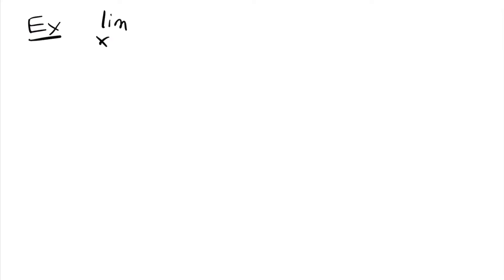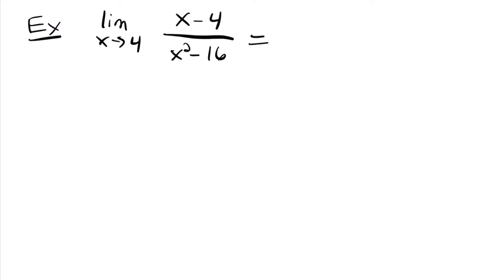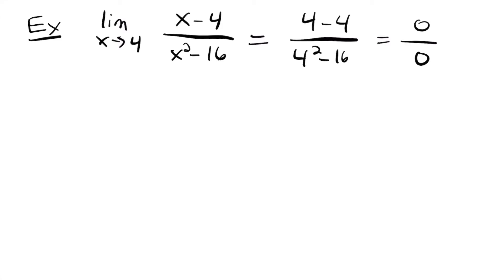Let's do another example. This time we're looking at the limit as x approaches 4 of x minus 4 over x squared minus 16. Again, let's plug in 4 first: we get 4 minus 4 over 4 squared minus 16, which is 0 over 16 minus 16, giving us 0 over 0. So we have an indeterminate form and we have to manipulate this function. Let's try factoring — I can see right away that we have a difference of squares in the denominator.